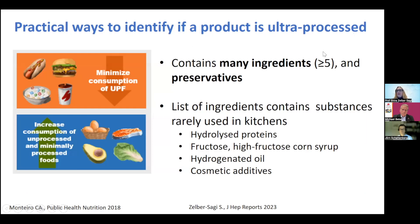How do you recognize ultra-processed foods? You can look at the ingredient list. You can recognize them by a very long list — more than five ingredients — including all kinds of preservatives and coloring. The list also includes things you don't recognize and wouldn't use in your own kitchen: hydrogenated oil, cosmetic additives, hydrolyzed proteins, high fructose corn syrup. If you see these ingredients, that's probably an ultra-processed food and you should eat less of it.